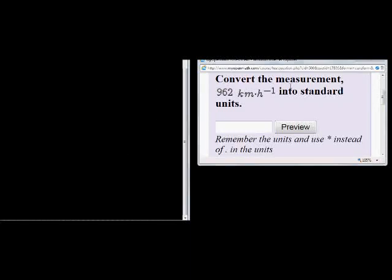In this question we're asked to convert the measurement 962 kilometers per hour into standard units. So we have 962 kilometers per hour, and I'm writing it like that just so you can see that since I want to go to meters per second, I'm going to have to take kilometers to meters and hours to seconds.